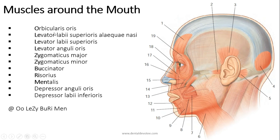There are a number of muscles: orbicularis oris, levator labii superioris alaeque nasi, levator labii superioris, and I have devised the mnemonic to remember them all. Oh lazy buri men.